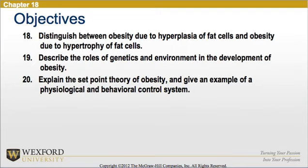Sixteen, explain how deaths from cardiovascular disease have decreased while the prevalence of obesity has increased. Eighteen, distinguish between obesity due to hyperplasia of fat cells and obesity due to hypertrophy of fat cells. Nineteen, describe the role of genetics and environment in the development of obesity. And twenty, explain the set-point theory of obesity and give an example of the physiological and behavioral control system.